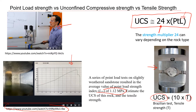Let's look at this example and see how we can estimate the unconfined compressive strength of this rock. We know the point load index is 1.12 MPa, so we use this equation. UCS equals 24 times 1.12.